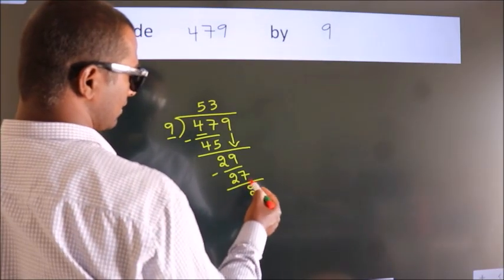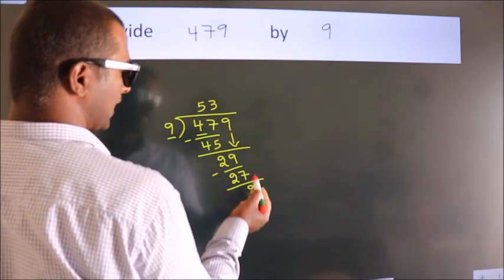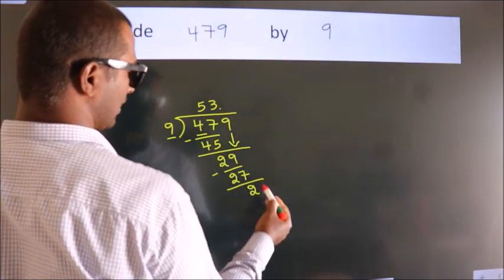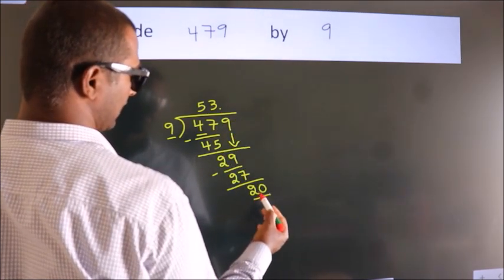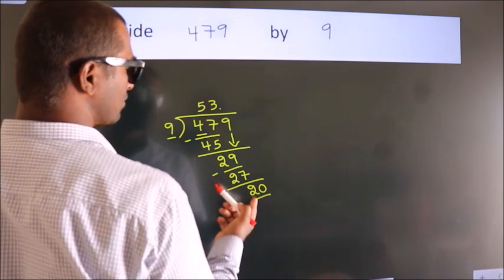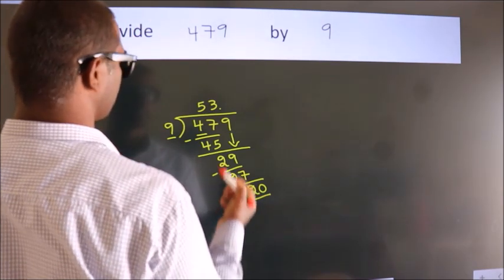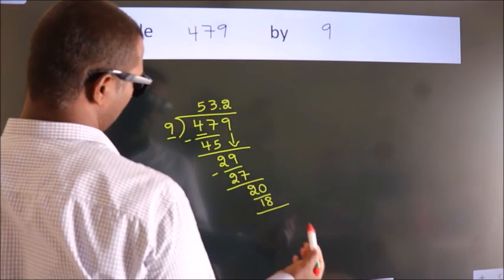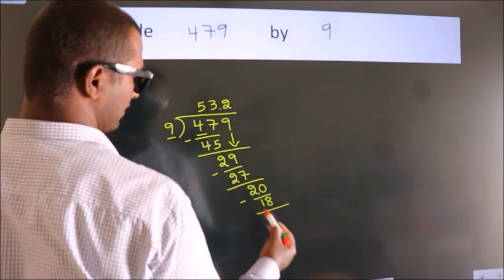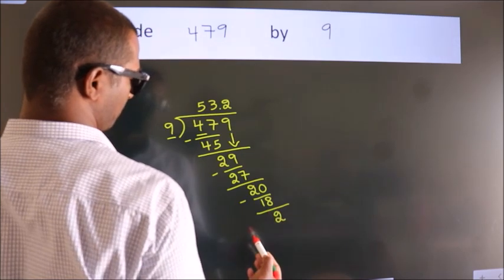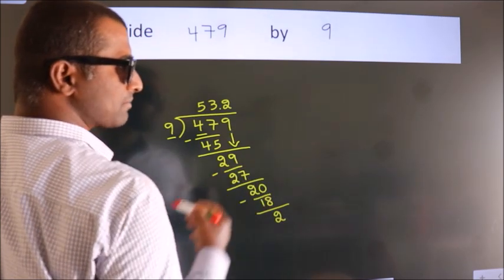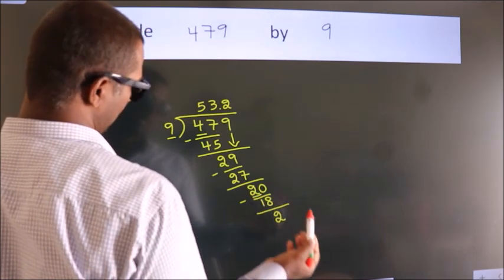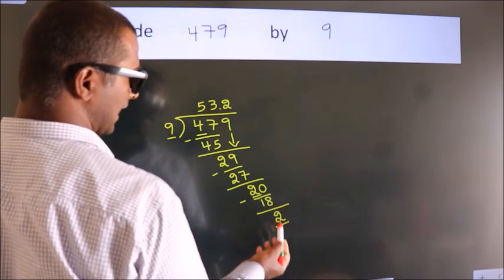After this, no more numbers to bring down. So, what we subtract, we get 2. Now, you observe, here we had 2 and we got 2 again.